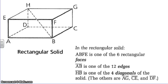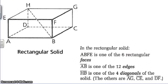Let's first go over a few different types of solid figures. The first one we have here is a rectangular solid. As you can see here, we have ABFE is one of the six rectangular faces. AB is one of the twelve edges. So we have AB as an edge, BC would be an edge, FB would be an edge as well. Again, there's twelve of those.